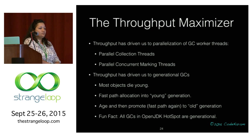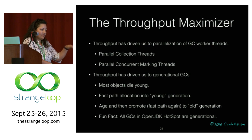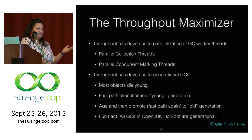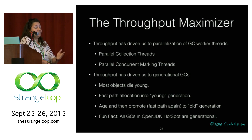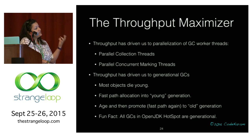Why were generational GCs introduced? Most objects die young. You have fast-path allocation into the young generation for most objects. You try to age objects so that short-lived objects die. Transient and long-lived objects — your actual live data set — get promoted into the old generation. Promotion is also fast path via local allocation buffers.